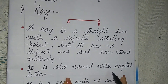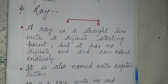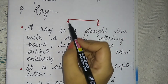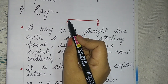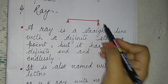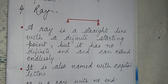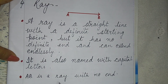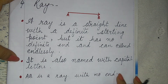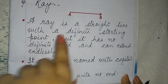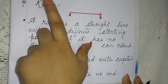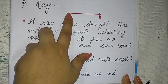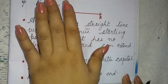A ray is also named with capital letters. As you can see, there is point A and point B — this is a ray. One side is a point and the other side is an arrow. AB is a ray with no end — it has a starting point but no ending point.